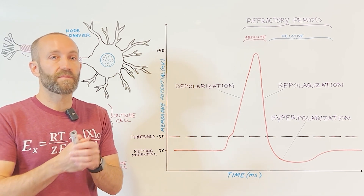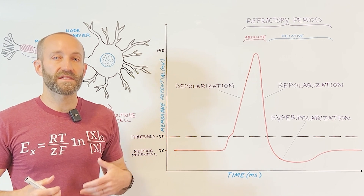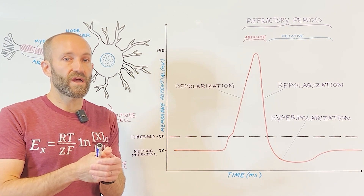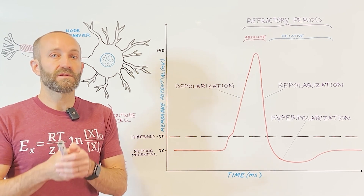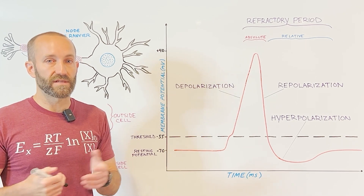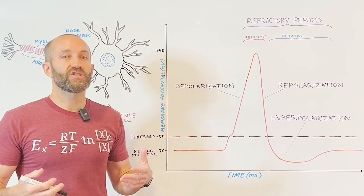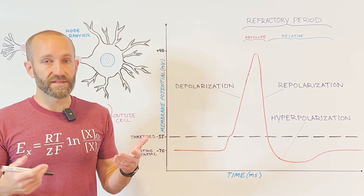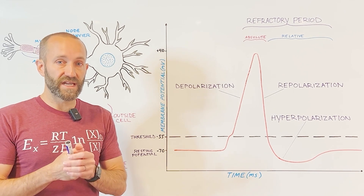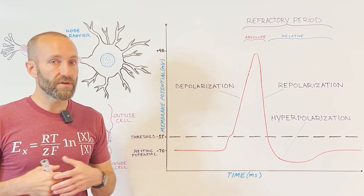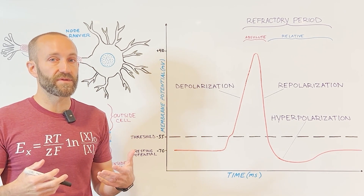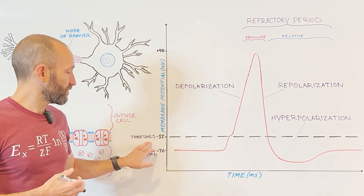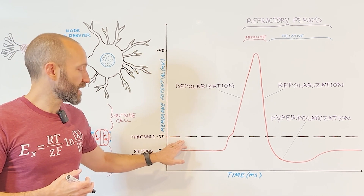Depolarization can occur, for example, when neurotransmitters bind to receptors and cause positively charged ions to flow into the neuron. This influx of positively charged ions will cause the inside of the neuron to become less negative, depolarizing it. These small changes in membrane potential caused by neurotransmitter binding and the resultant flow of ions into the neuron are called postsynaptic potentials. The neuron sums together these changes in membrane potential, and if the resultant depolarization reaches a certain point — which we refer to as threshold — then an action potential will fire.